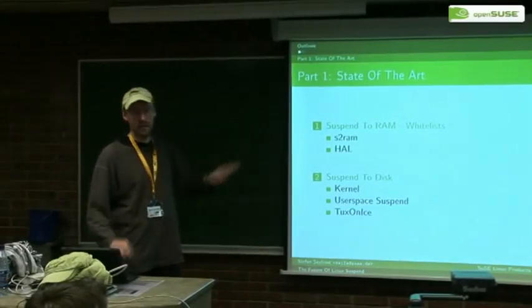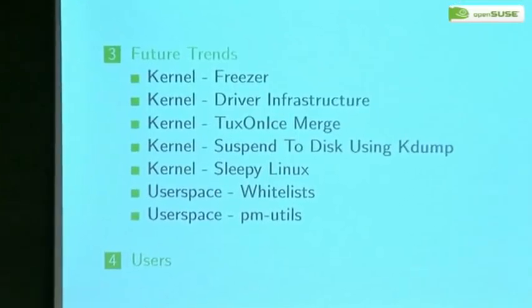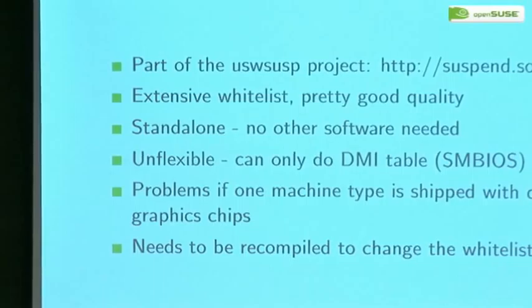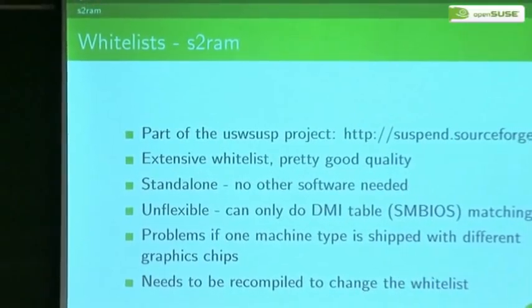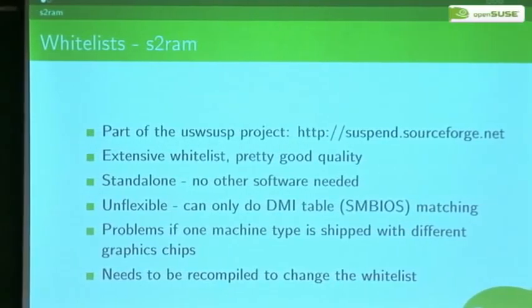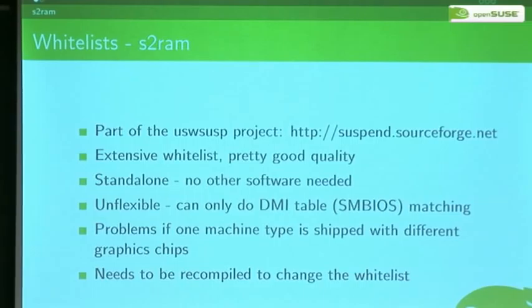First I'll describe what's the state of the art now — that's what most of you should already have seen. The second part is what's next; that's the more interesting part. So today, if you want to get suspend to RAM working, basically from the kernel side it's working well. What often does not work that well is getting the video card back to life. We need to somehow identify the machines that work and whitelist them based on some matching — if it's a DMI match. There are two ways to whitelist them today.